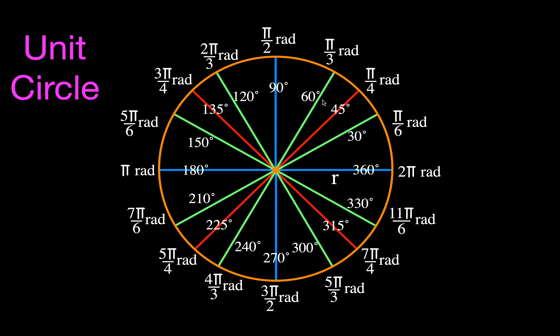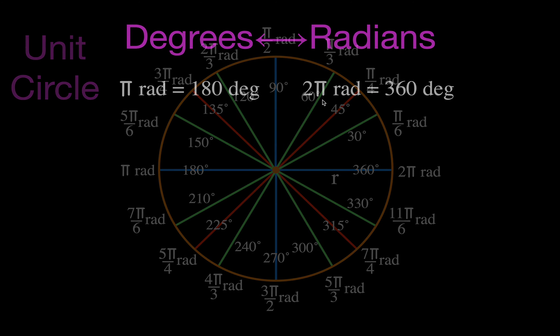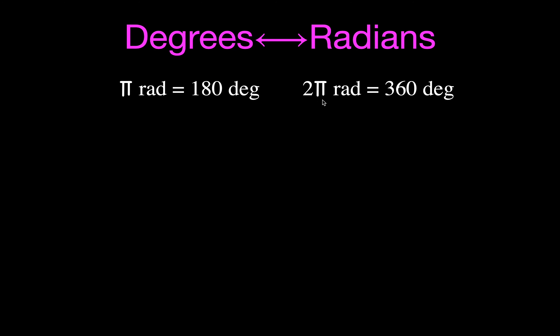That's the unit circle — not so bad. Don't memorize it, learn it. Now we'll do some conversions between degrees and radians. We have these two conversion factors; I like to use pi radians equals 180 degrees.